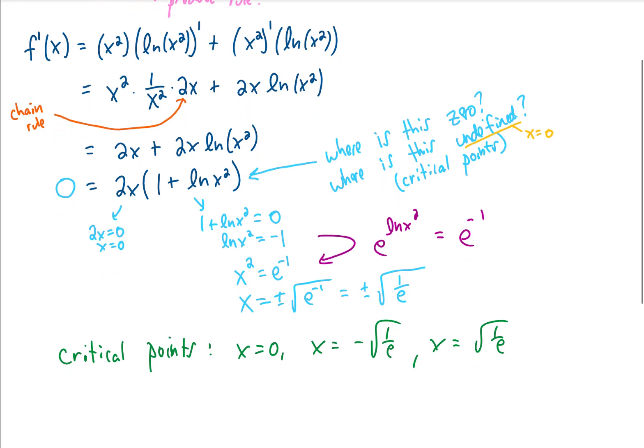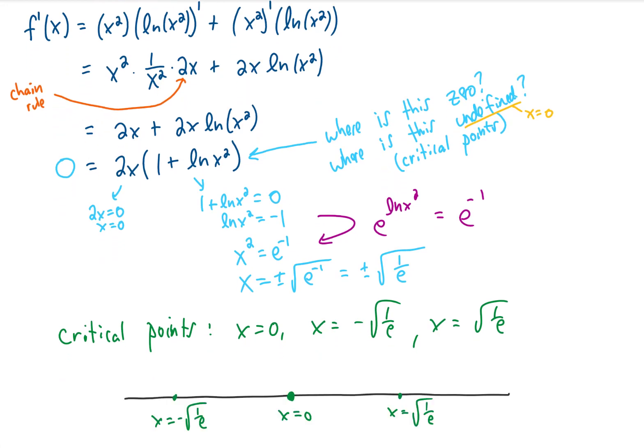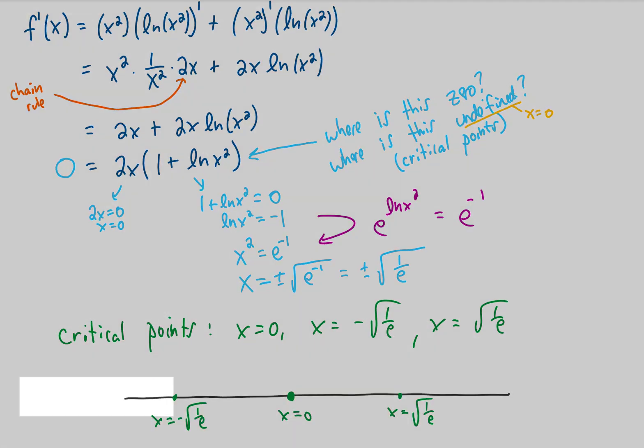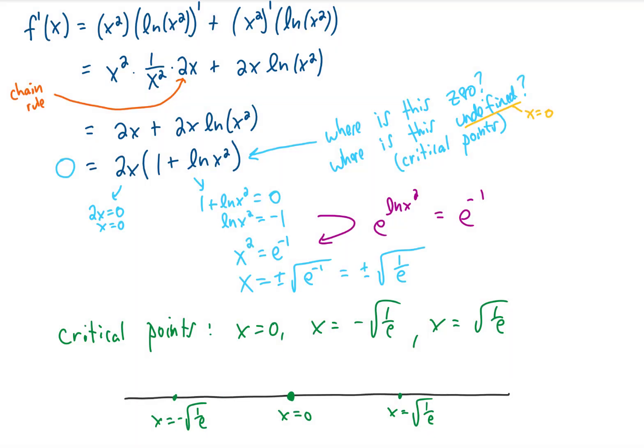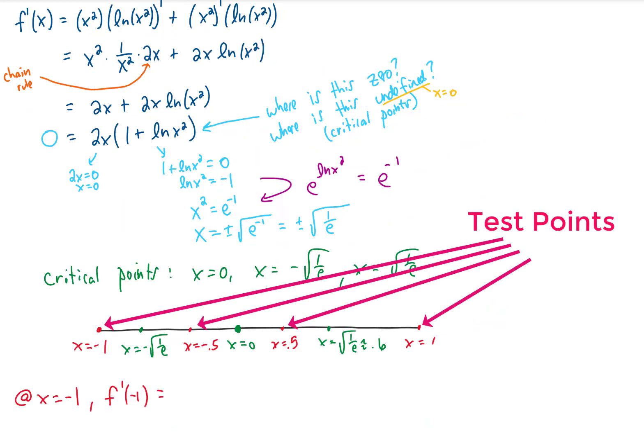Let's draw ourselves a number line, and you can see that the three critical points split up our number line into four distinct regions. Now in each of these four regions, the original function is either going to be always increasing or always decreasing. So what we do is we choose some test points from each one of these four regions. To determine if a function is increasing or decreasing, we need to plug those test points into our first derivative.